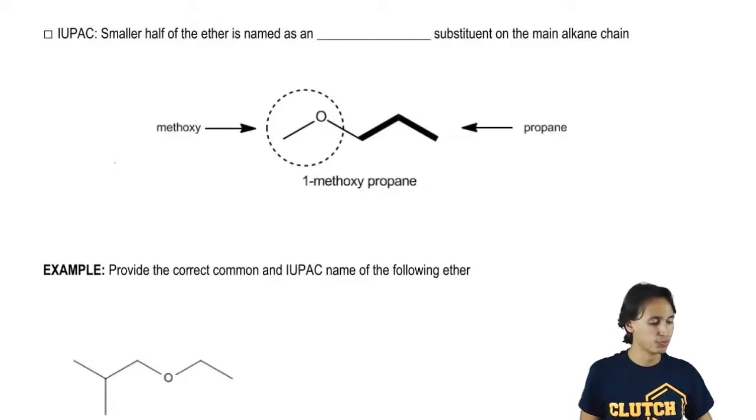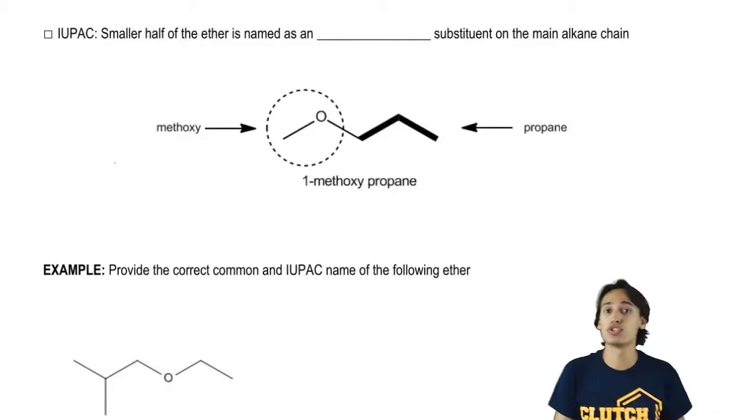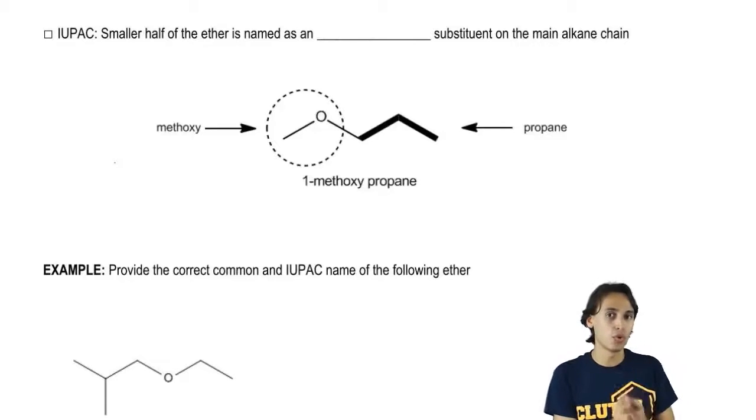So for IUPAC what we would do is we would use the same rules that we use for naming alkanes but we would name the OR group as a substituent instead.